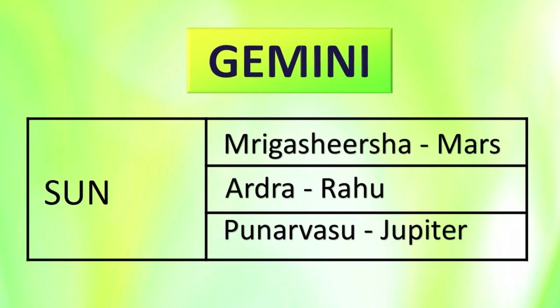Except the star Ardhra, whose planet lord is Rahu, when the Sun is present in the other stars such as Mrigashirsa or Punarvasu — whose planet lords are Mars and Jupiter respectively — there will be more benefits. I am going to share a very important point. In order to make a prediction, if a planet is in the house of Gemini and resides in the star Mrigashirsa whose star lord i.e. Nakshatra lord is Mars, you will assess the strength of Mars and check for which houses to the ascendant Mars is the lord.